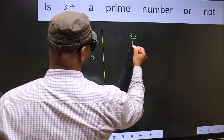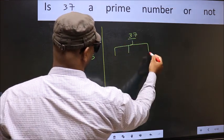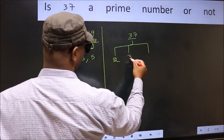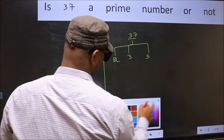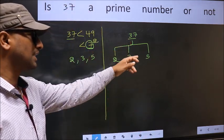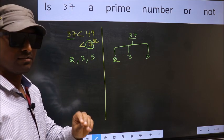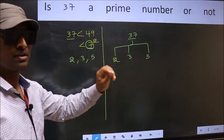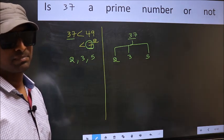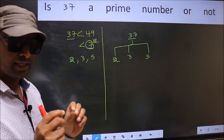Now for the given number, check divisibility by these numbers, that is 2, 3, and 5. If 37 is divisible by any one of these numbers, we say it is not prime. Otherwise, we say it is prime. Clear with the method.